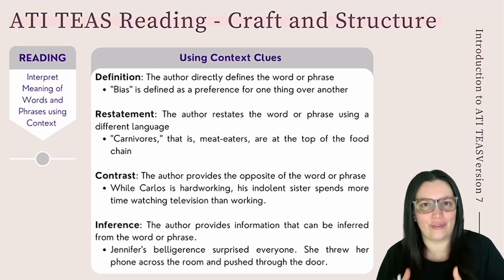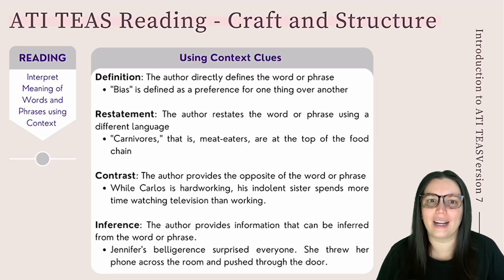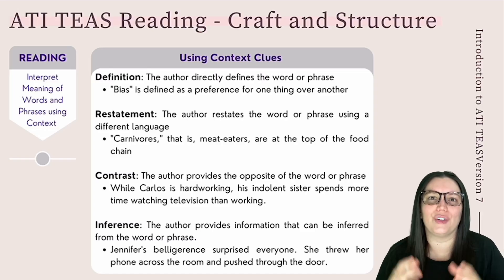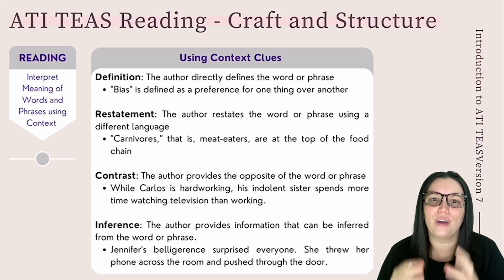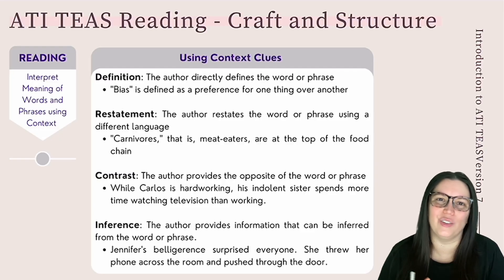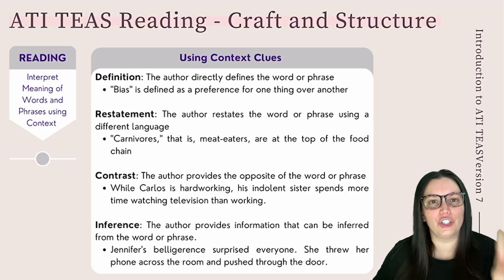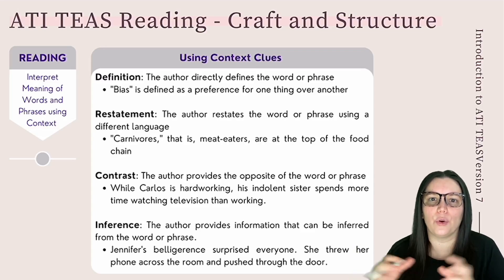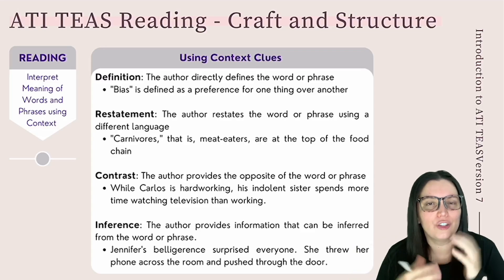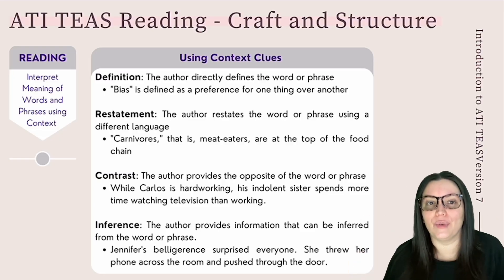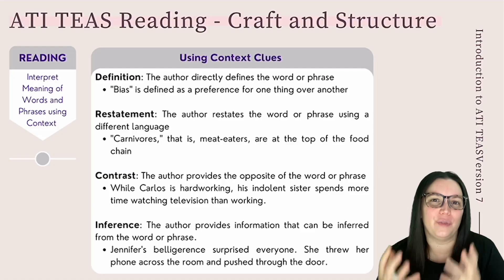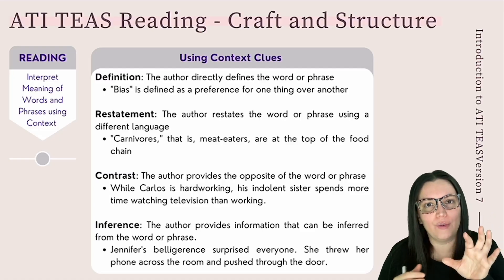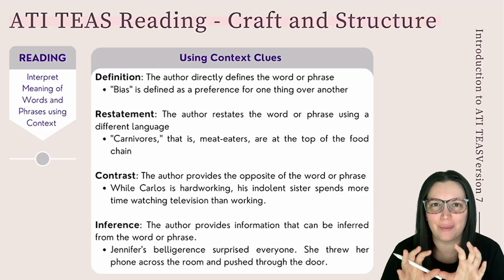Number one is definition — the author directly defines the word or phrase. For example, 'the word bias is defined as a preference for one thing over another.' Number two is restatement — the author restates a word or phrase using different language. For example, 'carnivores, that is meat eaters, are at the top of the food chain.' Carnivores are meat eaters — that is restatement.